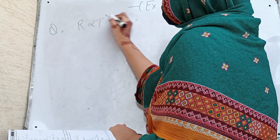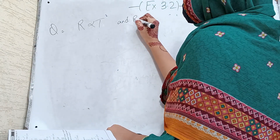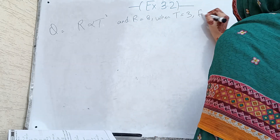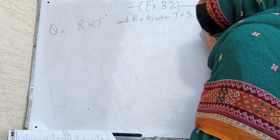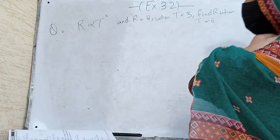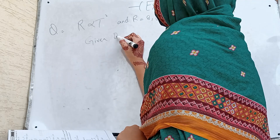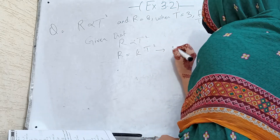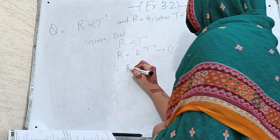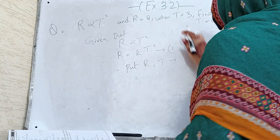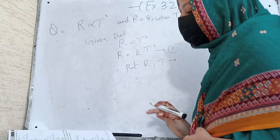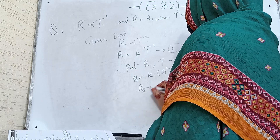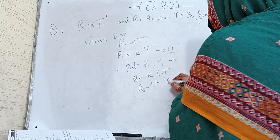r is directly proportional to t squared, and r is equal to 8 when t is equal to 3. Find r when t is equal to 6. Since r is directly proportional to t squared, r equals k times t squared — this is the first equation. Substituting r equal to 8 and t equal to 3: k equals 8 divided by 9.